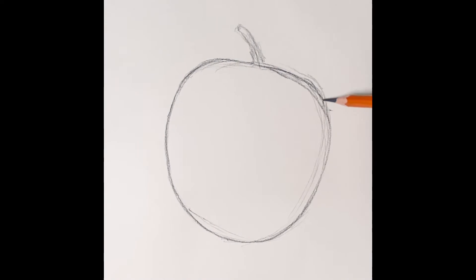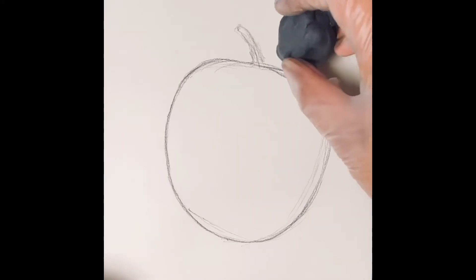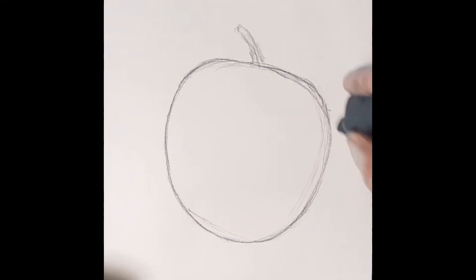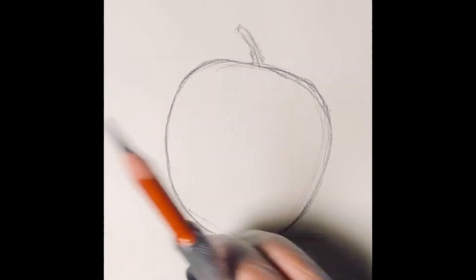To portray the illusion of an apple, I map out the light sources. In the final drawing, the lightest area will be in the top left, casting the shadow to the lower right side of the apple. I sketched in these key areas.